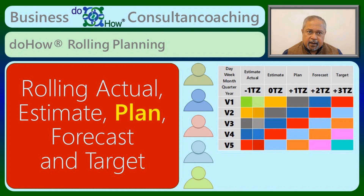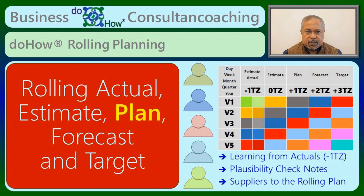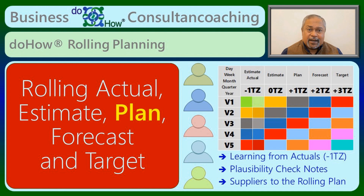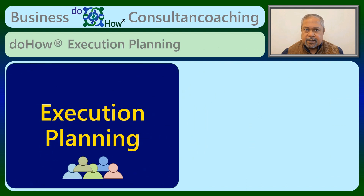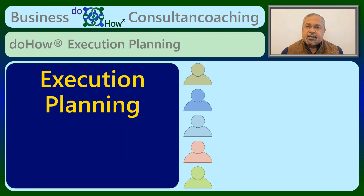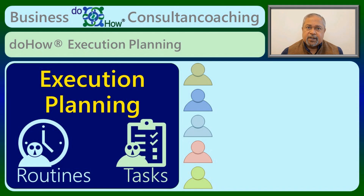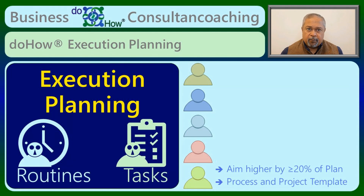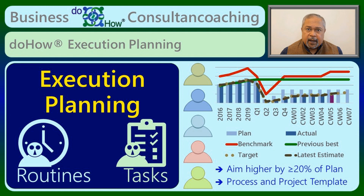Apart from planning, the key is to continually learn from the actual performance against the estimate and mandatorily make notes on the plausibility check done to make the rolling plan realistic — however, with a slight stretch as a motivator, so that confidence and trust gets built up over time by consistently fulfilling the plan. The execution planning is done by all the suppliers of the rolling plan by defining sufficient routines and tasks for getting the business processes and project toolkit templates ready, with the aim that the total contribution is at least 20% higher than the plan for taking care of all the unforeseen surprises and risks during execution.